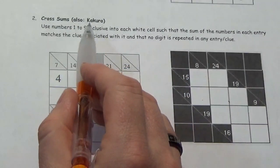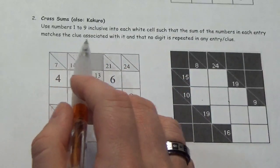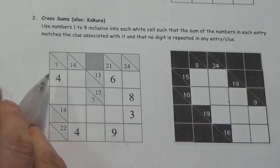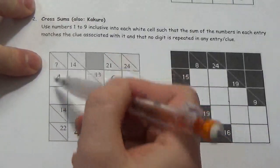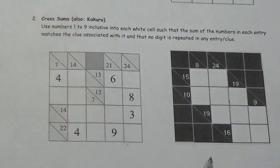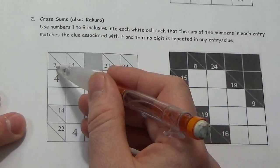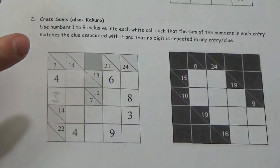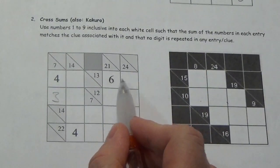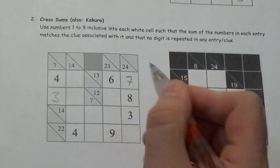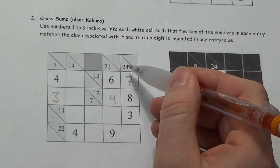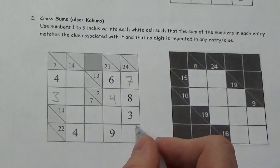This one's called cross sums — it's also called Kakuro. We're going to use the numbers 1 to 9 to fill in each white cell. Some clues give us sums: when you see a line with a 7 at the bottom, the sum of the two numbers going that way adds up to 7; this one adds up to 14 going the other way. Some obvious things: if this is 7 and this is 4, this has got to be 3. This is 13, so these two have to add up to 3 — so this is 7. This is 12, this is 8, so this has got to be 4. This is 24: 24 minus 7, minus 8, minus 3 — that's got to be 6.